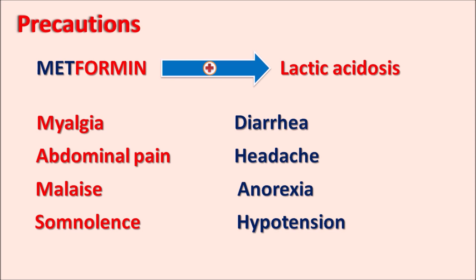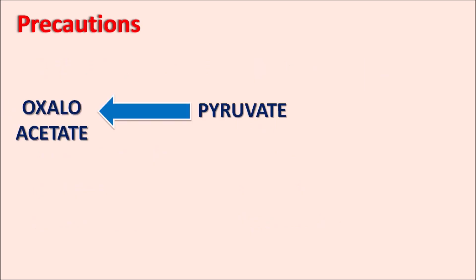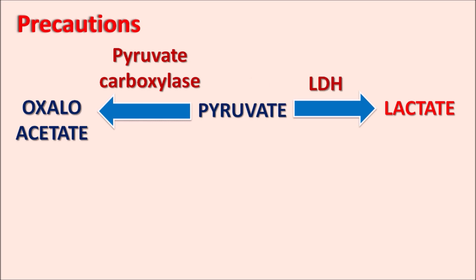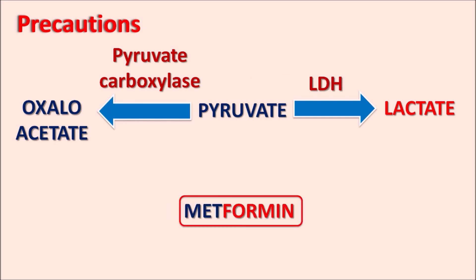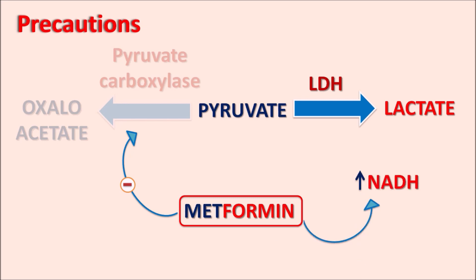Metformin contributes to lactic acidosis through two steps involving pyruvate. It inhibits pyruvate carboxylase, blocking conversion of pyruvate to oxaloacetate and thus reducing gluconeogenesis. It also inhibits the electron transport chain complex I, raising NADH levels. Since NADH is a cofactor for lactate dehydrogenase (LDH), this increases conversion of pyruvate to lactate, raising lactate levels and causing lactic acidosis.